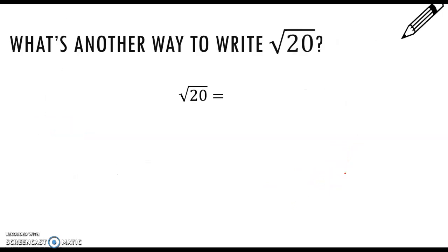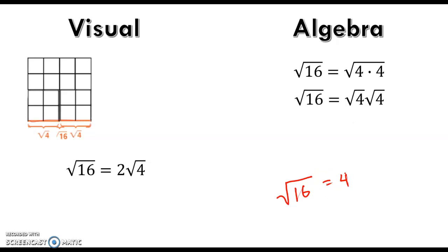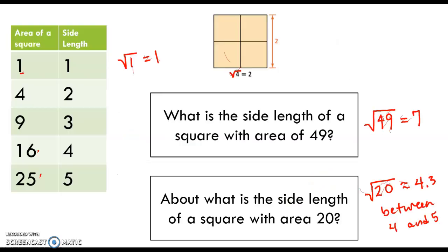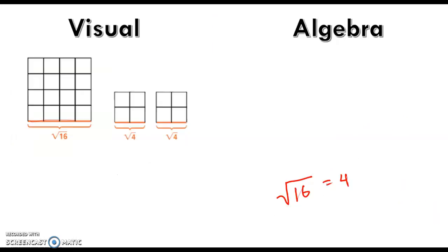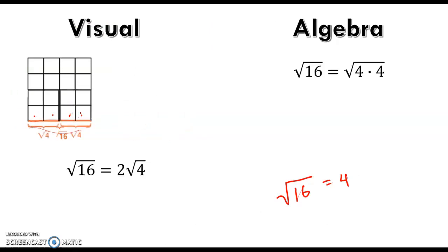Of course, another way to write the square root of 16 is just 4. You can see that in the first picture — the square root of 16 is 4, you can count the 4 boxes. But we're playing with other ways of writing that expression.